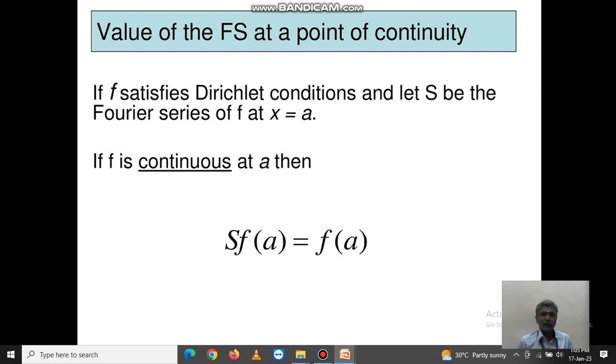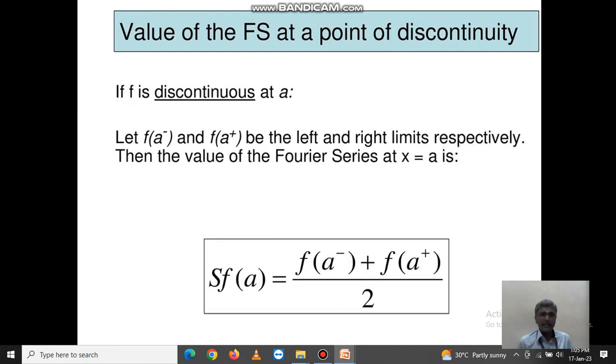Next one, value of the Fourier series at a point of discontinuity. If f satisfies Dirichlet conditions and let S be the Fourier series of f at x = a, if f is continuous at a, then Sf(a) = f(a).